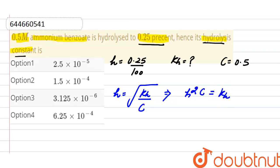Putting the values here, degree of hydrolysis is 0.25 divided by 100, squared, times concentration 0.5 equals hydrolysis constant. So (0.25/100) × (0.25/100) × 0.5 = kh.